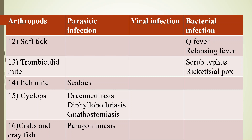So the important arthropods covered are: mosquito, sandfly, deer fly, tsetse fly, black fly, house fly, rat flea, cockroach, reduviid bug, louse, hard tick, soft tick, thrombiculid mite, itch mite, cyclops, crabs, and crayfish. We have talked about almost every medically important arthropod. Only one more week left for the exam — study well. All the best, thank you.